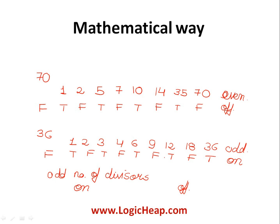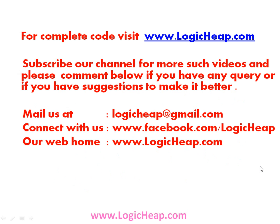We conclude that if a number has an odd number of divisors, it will remain on; otherwise it will be off. A perfect square always has an odd number of divisors. Thus, the answer is all perfect squares from 1 to 100: 1, 4, 9, 25, 36, 49, 64, 81, and 100. That was the mathematical way to solve it. Thank you for watching — subscribe for more videos and comment below with any queries or suggestions.